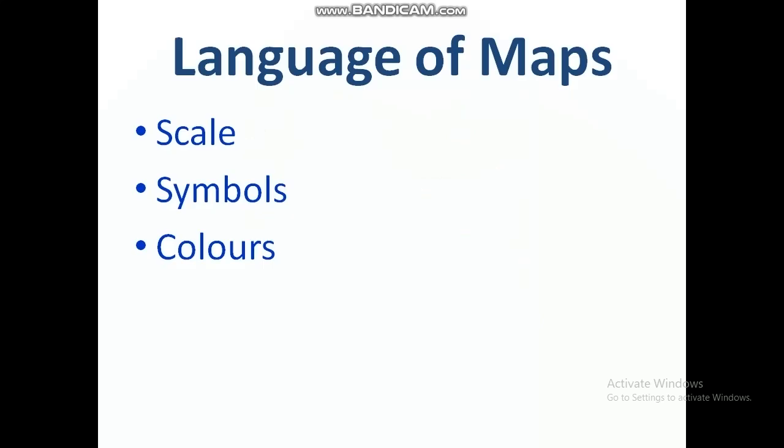It is very important to read a map by understanding the language of maps. Maps use the same language all over the world so that everyone can read any map anywhere. Whether we are sitting in any country or reading a map of another country, there is no problem — we can read it easily because we know the language of maps. The key points for the language of maps are: scale, symbols, and colors.